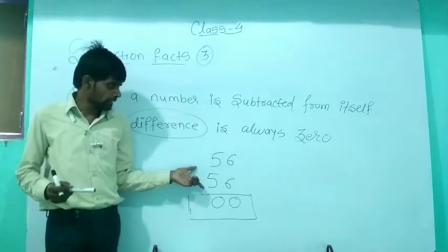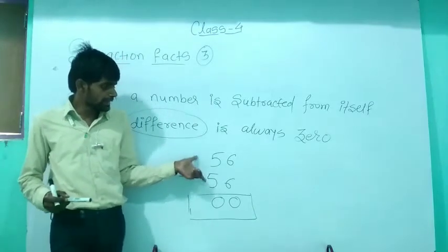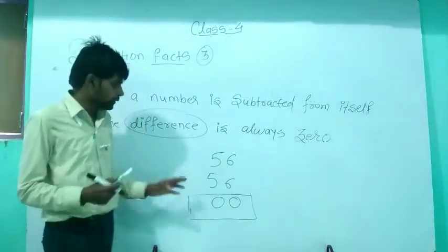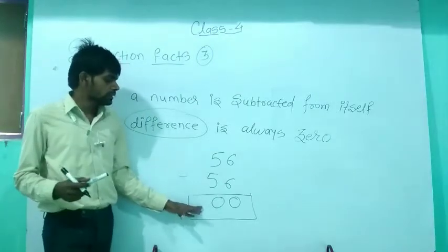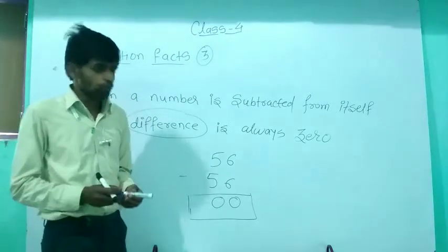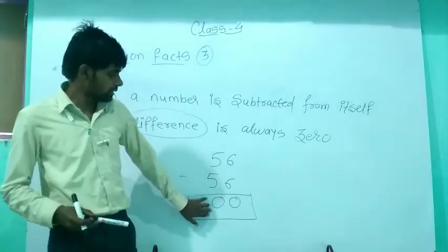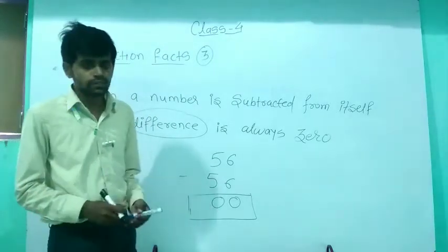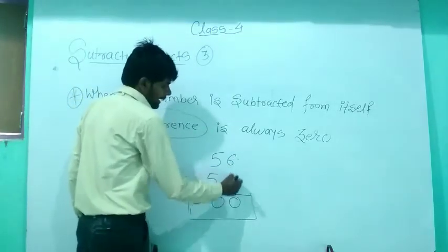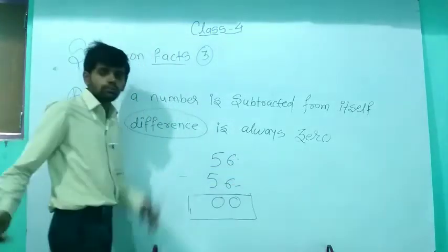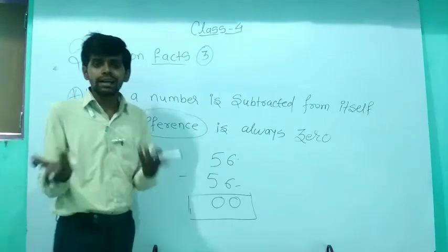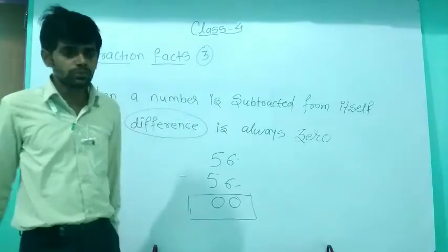Always remember: if you are subtracting any number from the same number — that is, subtracting the number from itself — you will get the answer 0. Here the minuend and subtrahend are equal, so the difference is 0.